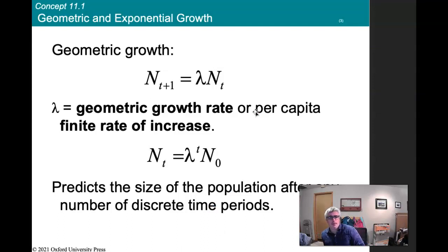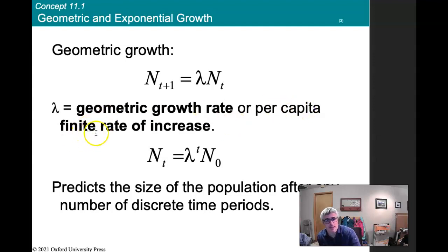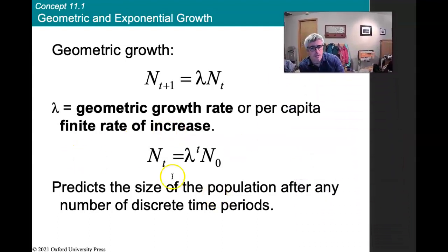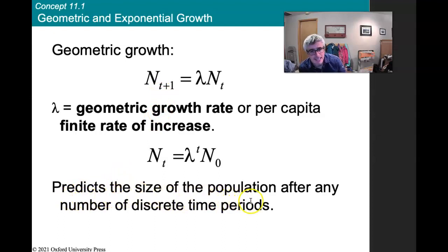For geometric growth we use lambda (λ) — the upside-down Y symbol — as the geometric growth rate, also called the per capita finite rate of increase. The equation is: N_{t+1} = λ × N_t, meaning the individuals we have this year times lambda equals the number we'll have next year. This predicts the size of the population after any number of discrete periods, and t must be an integer: 1, 2, 3, 4, 5, 6 — not 1.5, etc.